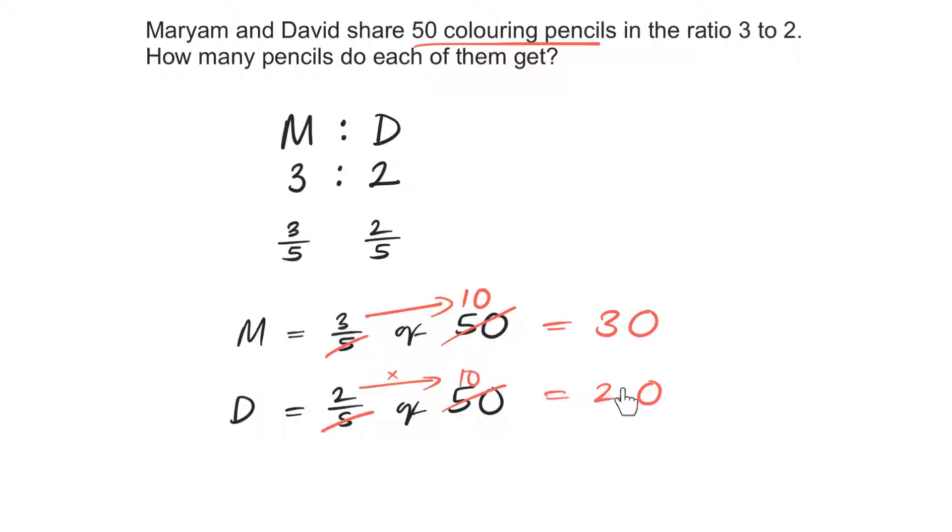Now, always check, do these numbers, do these amounts add up to the total amount of 50? Yes, they do. So, that's how you can check that you have not made a mistake.